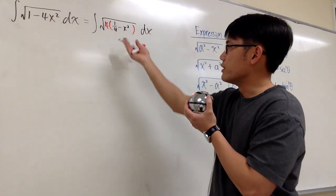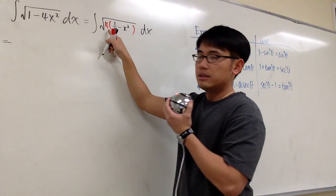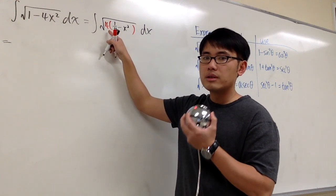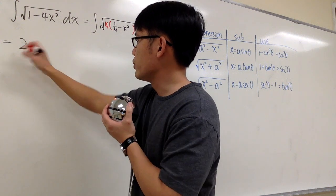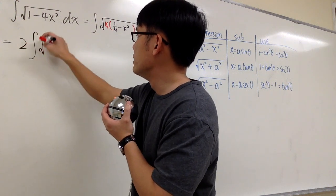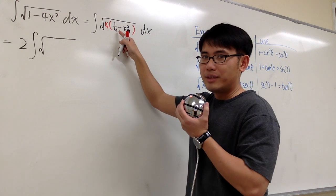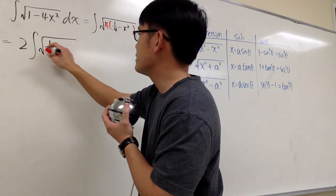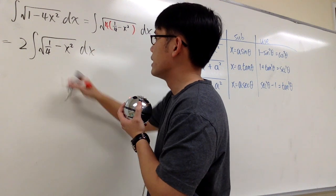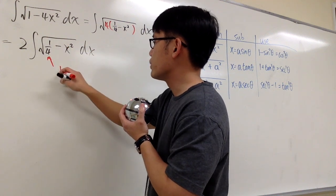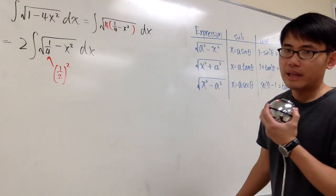What good does this do? Well, this is just square root of 4, which is the number 2. The 2 can go all the way to the front, so we have 2 times the integral of square root of 1/4 minus x squared dx. We have to look at 1/4 as (1/2) squared, and a will be 1/2.